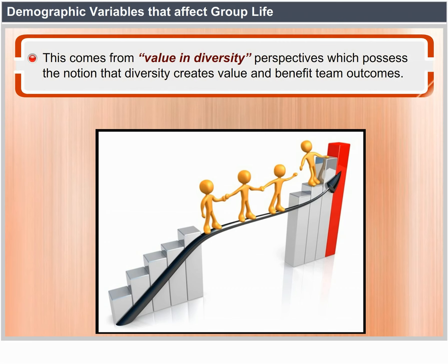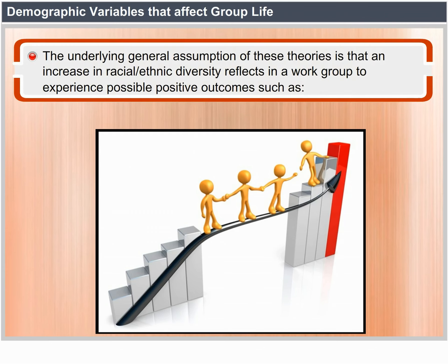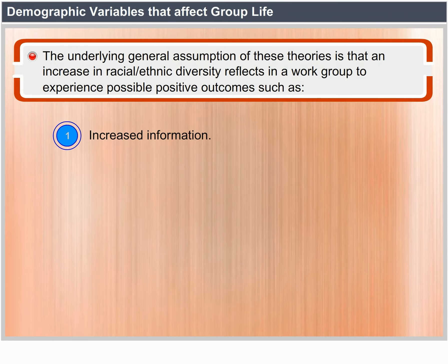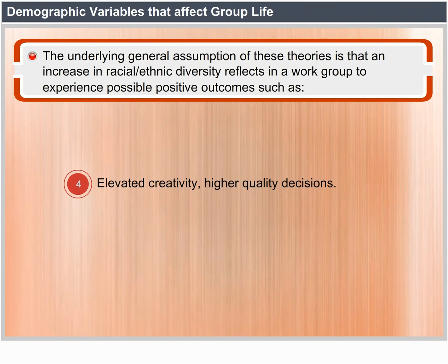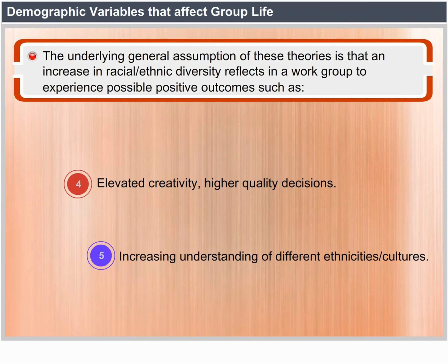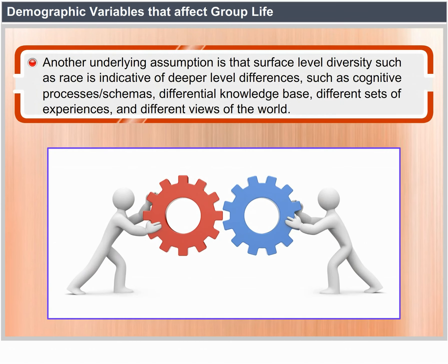Within the literature on race and ethnic diversity, there are theories that focus on positive outcomes. This comes from a value-in-diversity perspective which argues that diversity creates value and benefit for team outcomes. The general assumption is that an increase in racial and ethnic diversity means that a work group will experience positive outcomes such as increased information, enhanced problem-solving ability, constructive conflict and debate, increased creativity, and increased understanding of different ethnic cultures. Another underlying assumption is that surface level diversity such as race is indicative of deeper differences such as cognitive processes, schemas, differential knowledge base, and different views of the world.